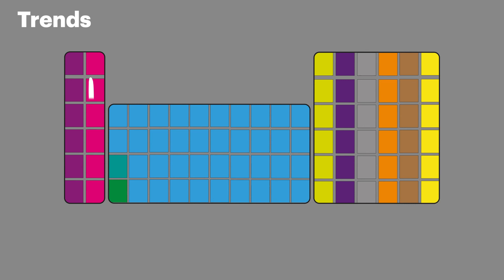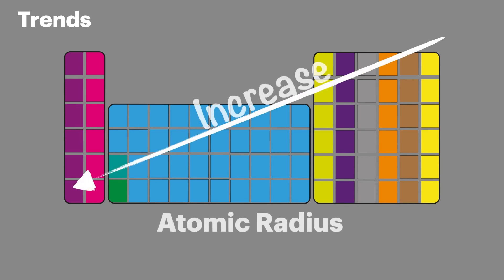In general, as we go down the periodic table, we get an increase in size and they also get bigger as we move from the right hand side to the left hand side. And this can be simplified into one arrow for our revision notes.